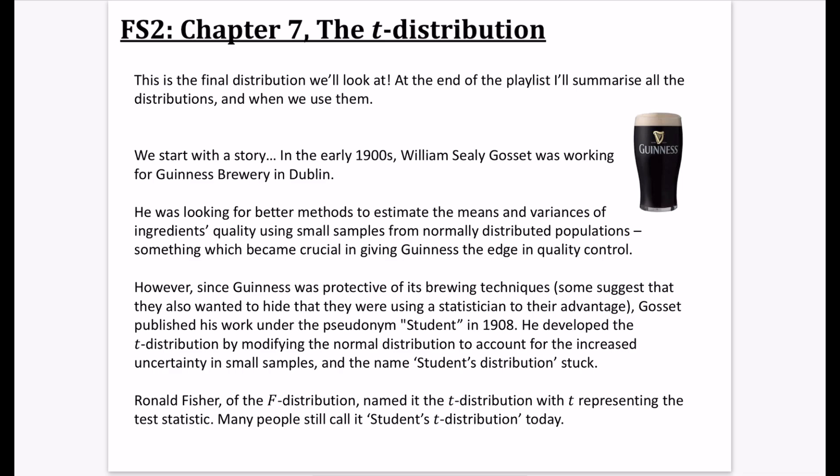We're going to start off with a little bit of a story here. In the early 1900s, a man named William Seeley Gossett was working for Guinness Brewery in Dublin. He was looking for better methods to try and estimate the means and variances of ingredients quality, using only small samples from normally distributed populations. This became crucial in giving Guinness the edge in quality control. He wanted to take a sample from a particular ingredient and estimate the quality and variation so that he could select the best ingredients to make this stout.